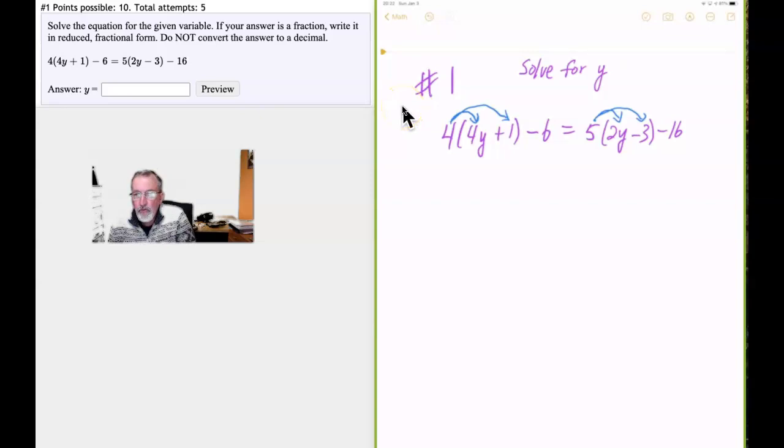4 times 4y, if you've got 4 of 4y's, you've got 16y's. So that's going to be 16y plus 4 times 1 which is 4 minus 6. So we can drop the parentheses for that. We've expanded this. We've distributed the 4 over these two elements and ended up with 16y plus 4 minus 6.